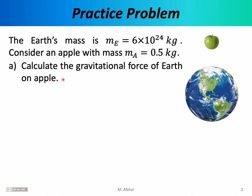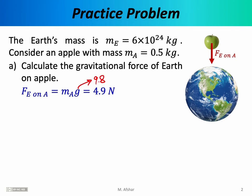We recognize this as the weight of the apple. We're going to assume the apple is near the Earth's surface. We know that the weight of any object equals mass times gravitational acceleration, which on Earth is 9.8 meters per second squared. So the force of Earth on apple is mass of apple times g: 0.5 times 9.8 gives us a weight of 4.9 newtons.